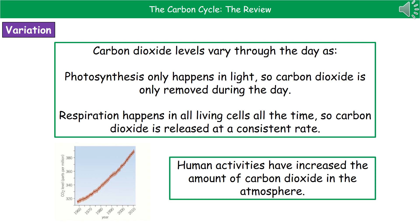The last thing we need to consider is how carbon dioxide levels in our atmosphere vary throughout different time periods. If we consider just a 24-hour period, during the daylight hours we will have photosynthesis — because photosynthesis requires light. So carbon dioxide is only being removed from the atmosphere during the day, whereas respiration, which releases carbon dioxide, happens at a consistent rate throughout day and night. So the amount removed by photosynthesis varies depending on whether it's day or night.